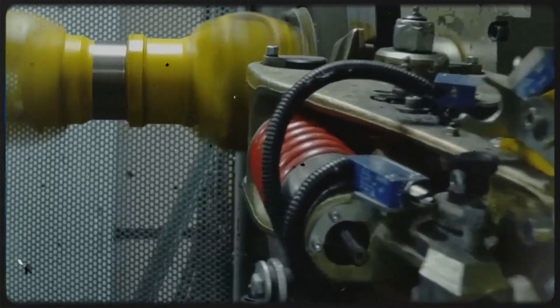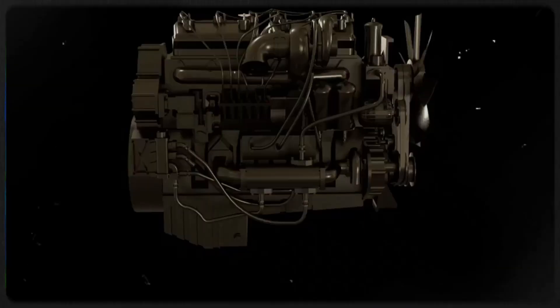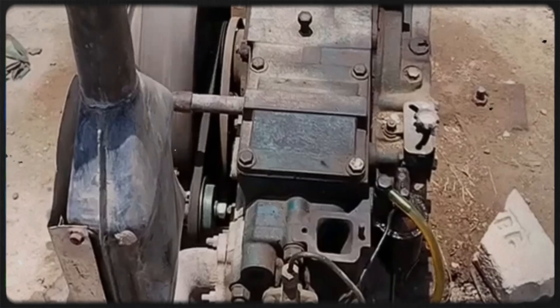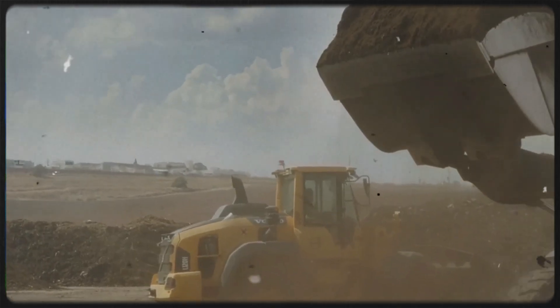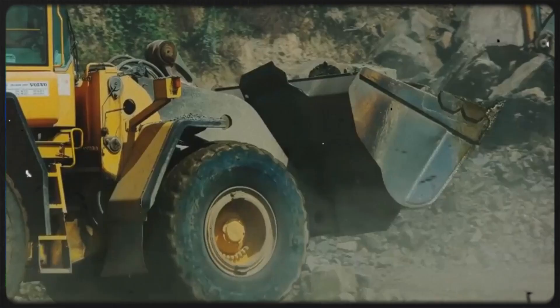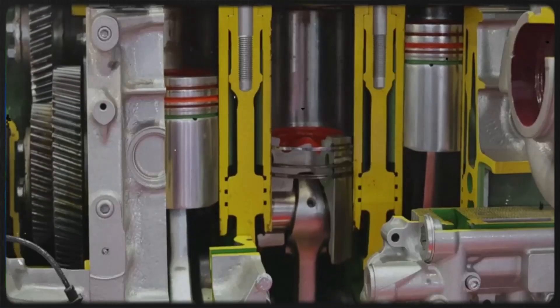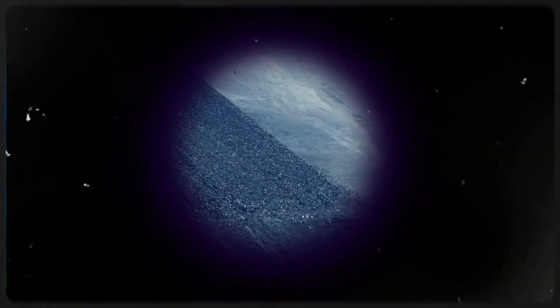To sum up, diesel engines are more fuel efficient because they use compression ignition, operate at higher compression ratios, run leaner air-fuel mixtures, don't restrict airflow with a throttle valve, and burn a denser fuel with more energy content. All these factors add up to lower fuel consumption compared to gasoline engines. And that's why diesels typically use less fuel. It's a mix of chemistry, physics, and smart engineering.